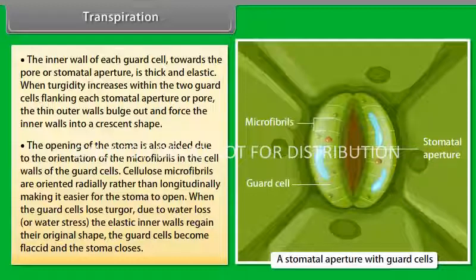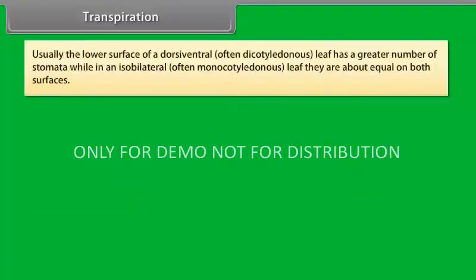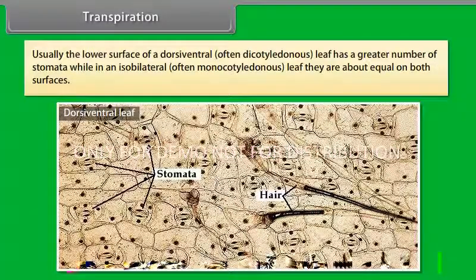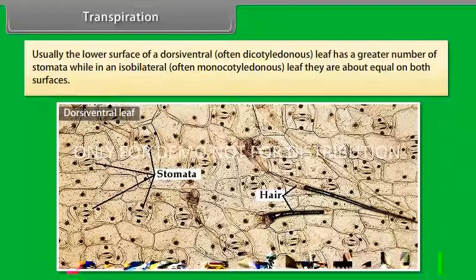When the guard cells lose turgor, due to water loss or water stress, the elastic inner walls regain their original shape. The guard cells become flaccid and the stoma closes. Usually, the lower surface of a dorsi-ventral or often dicotyledonous leaf has a greater number of stomata, while in an isobilateral or often monocotyledonous leaf, they are about equal on both surfaces.